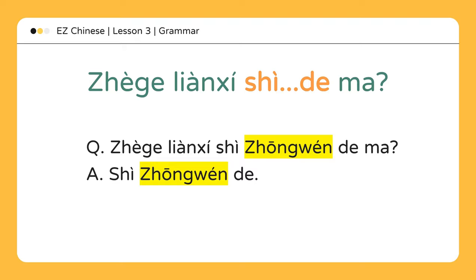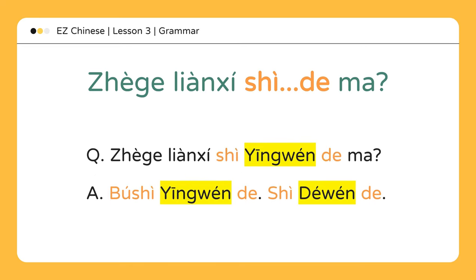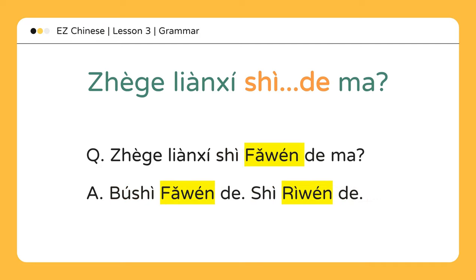这个练习是中文的吗? Is this exercise in Chinese? 是中文的。 Yes, it is in Chinese. 英文的吗? Is this exercise in English? 不是英文的，是德文的。 No, it's not in English — it is in German. 这个练习是法文的吗? Is this exercise in French? 不是法文的，是日文的。 No, it's not in French — it's in Japanese.